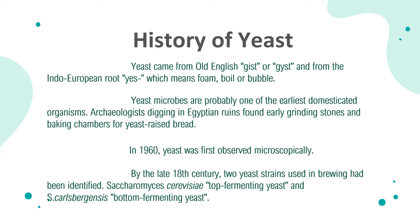Yeast microbes are probably one of the earliest domesticated organisms. Archaeologists digging in Egyptian ruins found early grinding stones and baking chambers for yeast-raised bread. In 1960, yeast was first observed microscopically, and it was Louis Pasteur who discovered yeast for bread. By the late 18th century, two yeast strains used in brewing had been identified: Saccharomyces cerevisiae, the top-fermenting yeast, and S. carlsbergensis, the bottom-fermenting yeast, also known as Saccharomyces pastorianus.